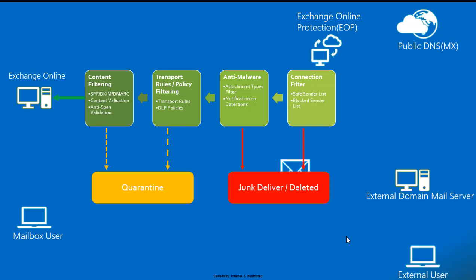Any problem with the mail or sender reputation results in the mail being directly deleted or delivered to junk, based on your configuration. You can do safe sender whitelisting or block certain domains or IP addresses as needed. Once the mail is found genuine, it is forwarded to the anti-malware filter, where mail attachments are scanned against malware and viruses. If any problem is found, the mail can be sent to junk or deleted.